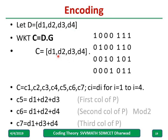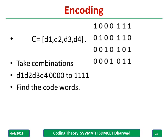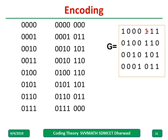For example, d = d1 d2 d3 d4. We consider all combinations from 0000 up to 1111, multiply each into G, and write the answer. Alternatively, c5 = d1 + d2 + d3, c6 = d1 + d2 + d4, and so on, reading from the columns of P. Remember: always use mod-2 arithmetic — 1+1 = 0, then +1 = 1. Take all 16 combinations from 0000 to 1111, multiply each by G, and write the code words. Pause here and try to find all the code words.